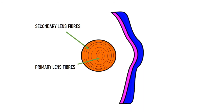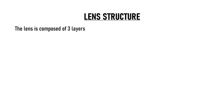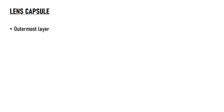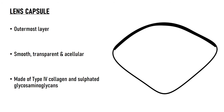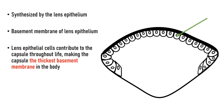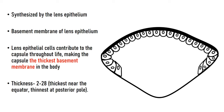The lens is composed of three layers: the capsule, epithelium, and lens fibers. The lens capsule is the outermost layer — a smooth, transparent, acellular layer made up of type 4 collagen and sulfated glycosaminoglycans. It is synthesized by the lens epithelium and is essentially the basement membrane of the lens epithelium. The lens epithelial cells secrete the capsule throughout life, making it the thickest basement membrane in the body, with thickness varying from 2 to 28 microns.